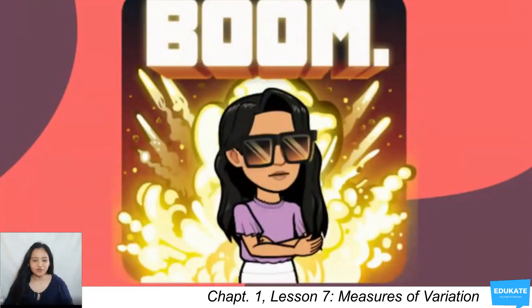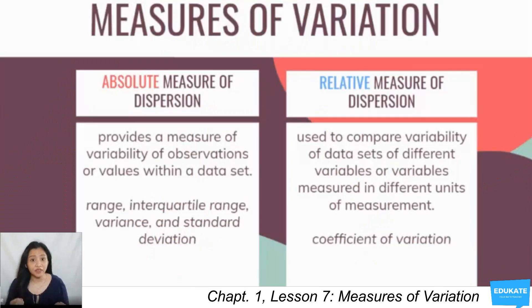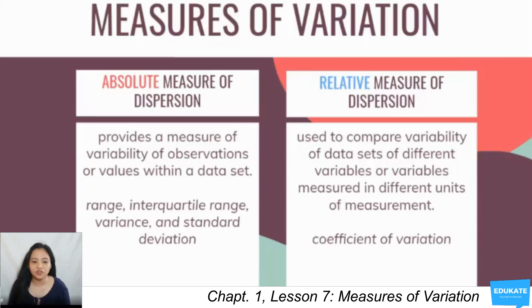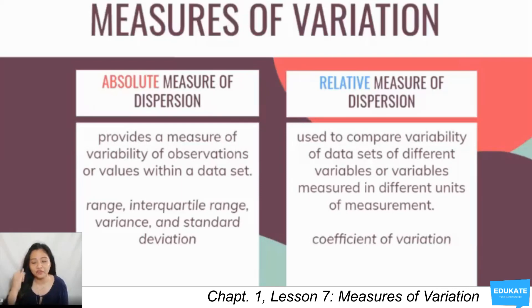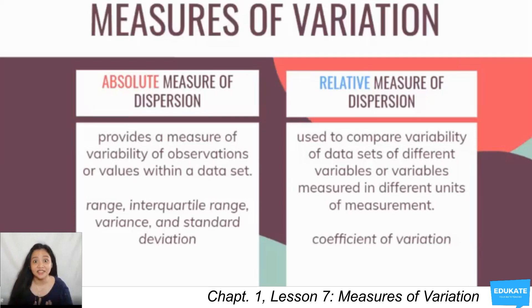Our topic for today is the measures of dispersion. We have two types: absolute measures of dispersion and relative measures of dispersion. Absolute measures of dispersion provide a measure of variability of observations within a data set. Relative measures of dispersion are used to compare variability of data sets of different variables or variables measured in different units. For absolute measures we have range, IQR, variance, and standard deviation; for relative measures we have the coefficient of variation.